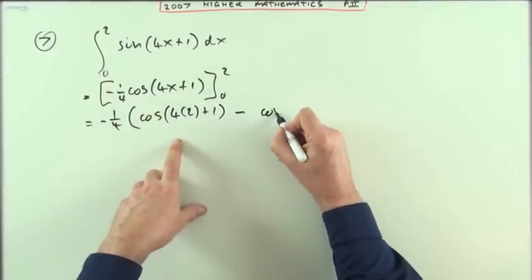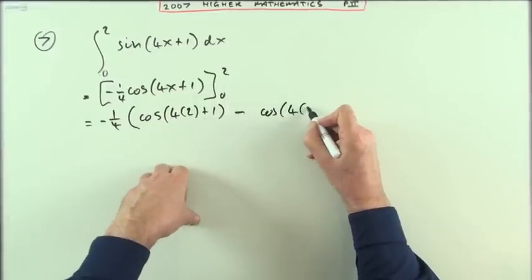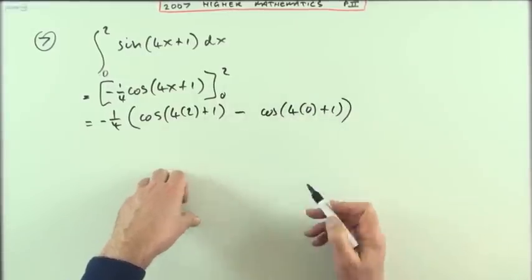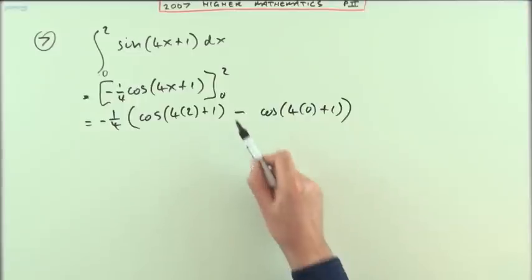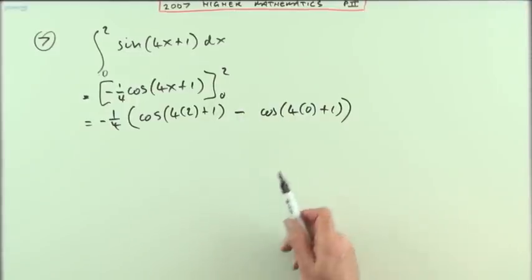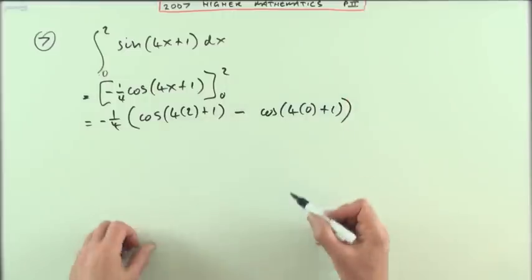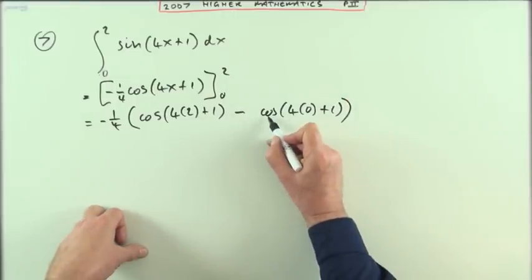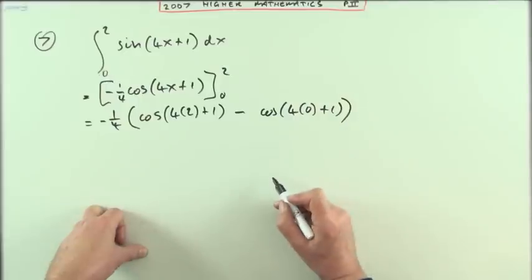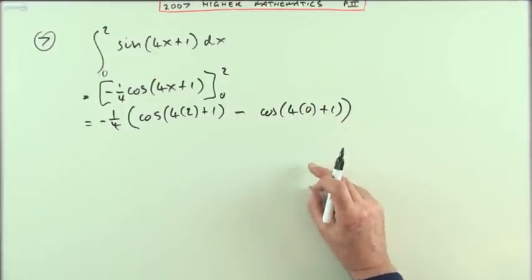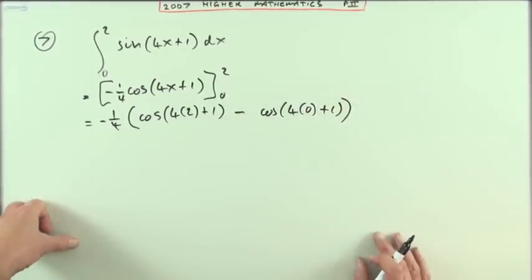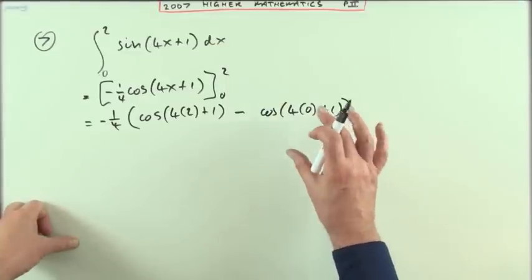Minus cos of four times zero plus one. Again, don't just immediately put a zero in for the whole of the second term because it happens to be zero there, because it's not just a simple polynomial type one. When it's trig they don't need to necessarily disappear, and if you've got a bracket, just because part of it becomes zero doesn't mean the whole thing's going to disappear. So just be careful to put it down as a proper substitution.